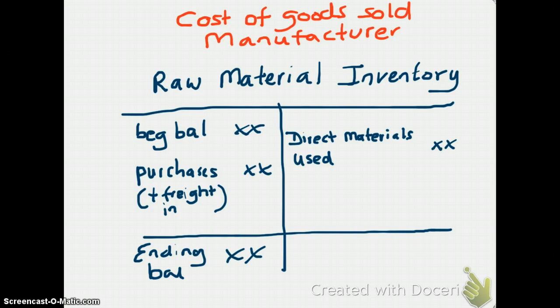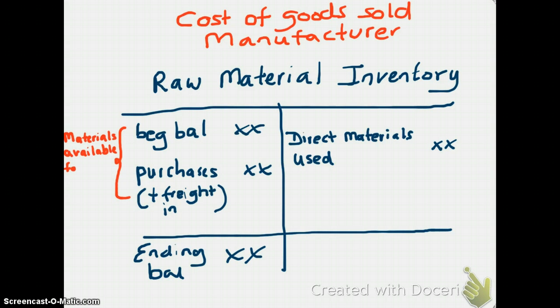To summarize: your raw material inventory account has a beginning balance, you add purchases, direct materials used decreases inventory, and whatever remains is your ending balance. Also, the term for beginning balance plus purchases of raw materials is called materials available for use.